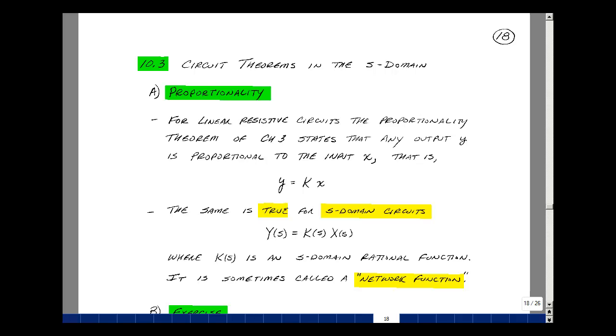Let's first take a look at proportionality. We showed in ECE201 that for linear resistive circuits, the proportionality theorem, which was in Chapter 3, states that any output is proportional to the input. In other words, you can write that y is equal to k times x.